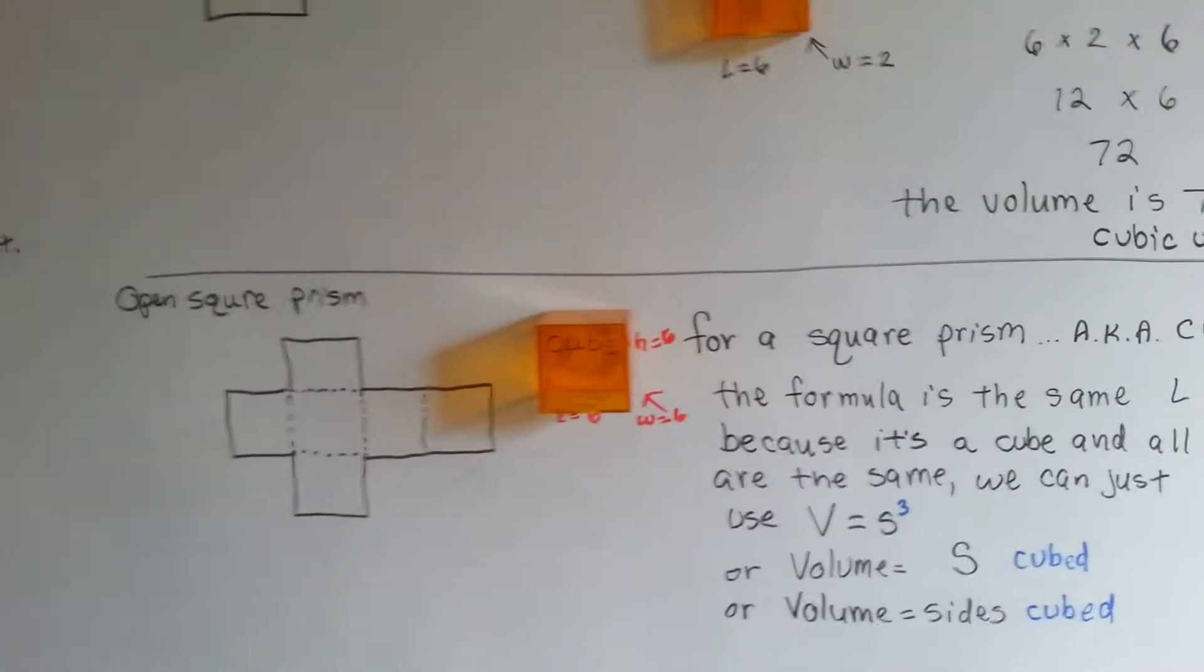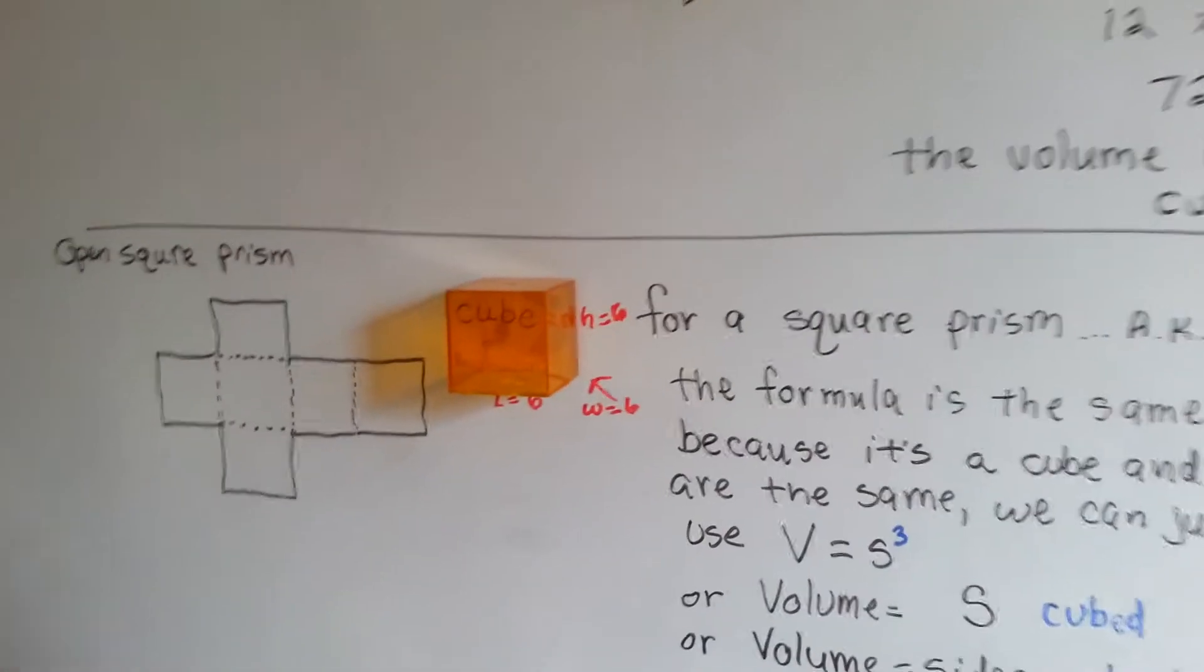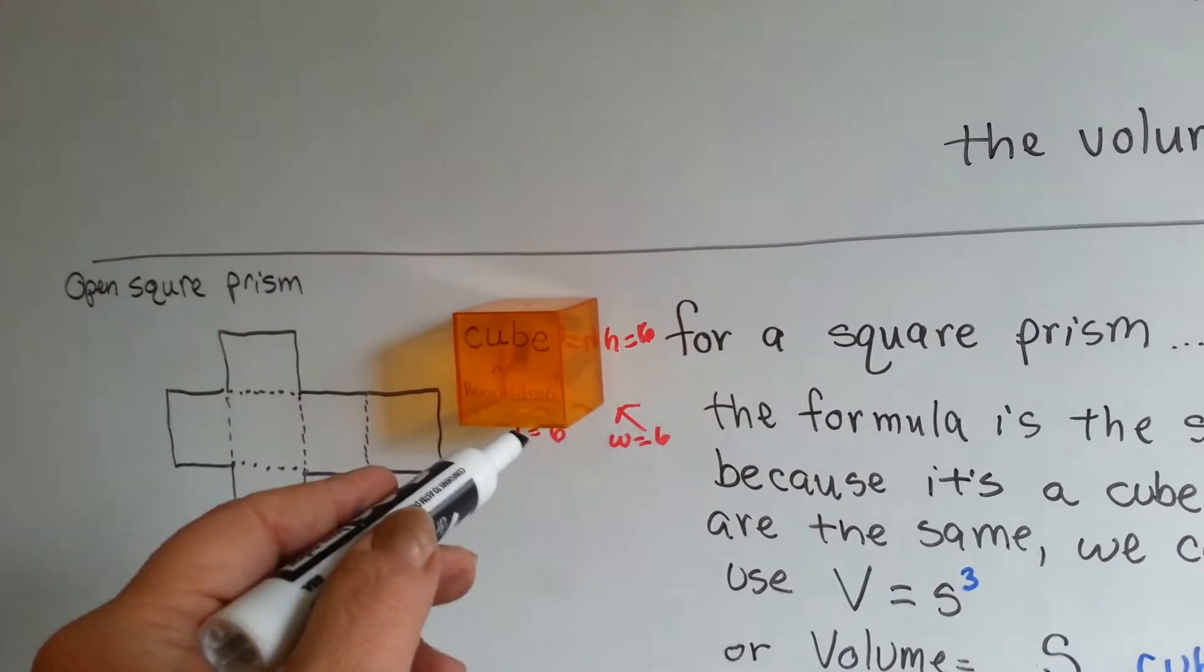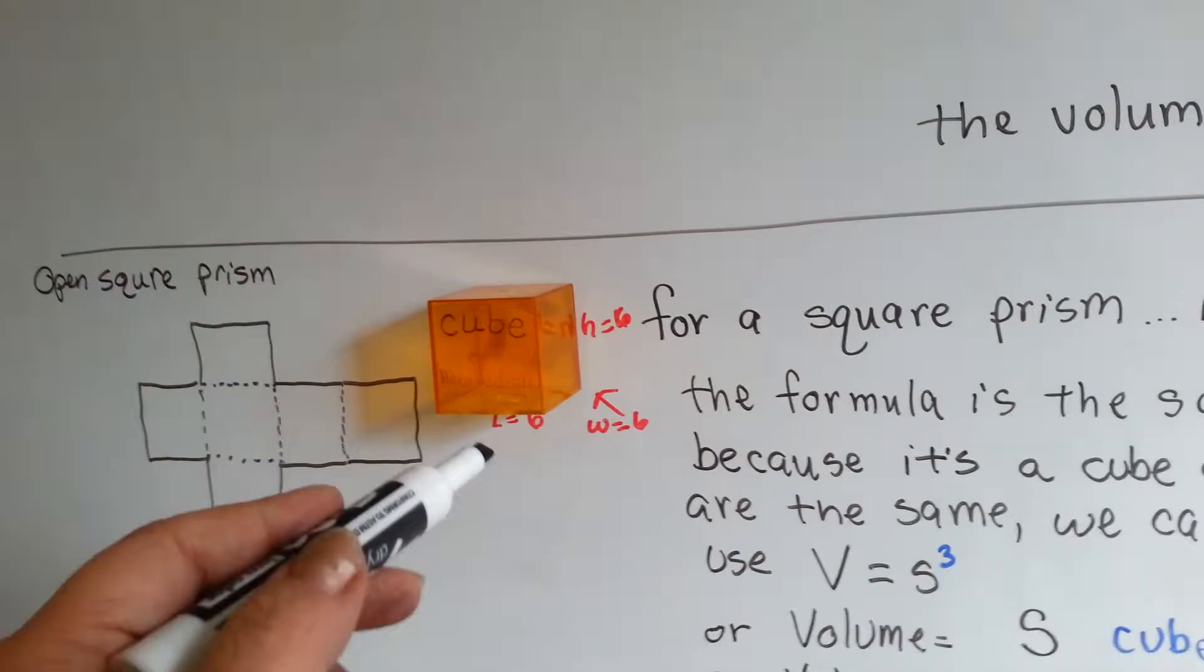Now, a square prism is basically just a hexahedron. It's a cube. The length is 6, the height is 6, and the width is 6.